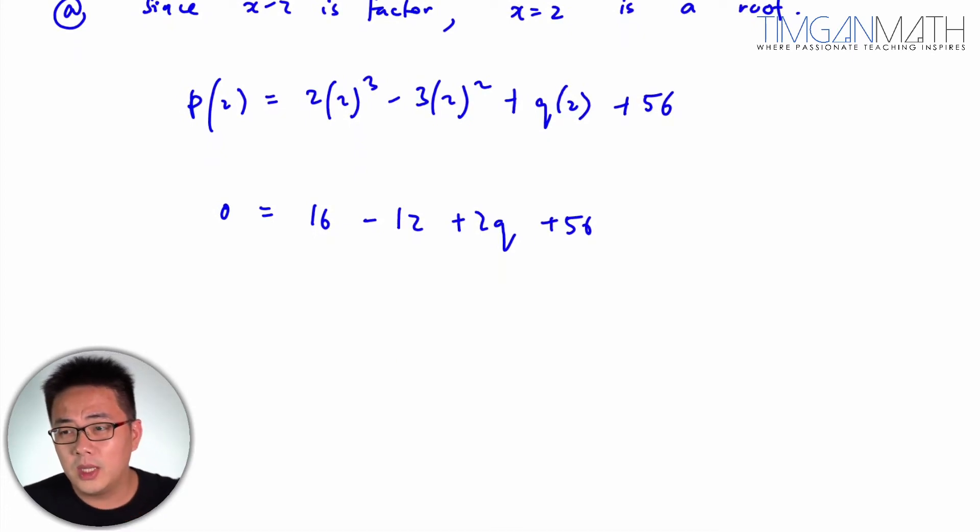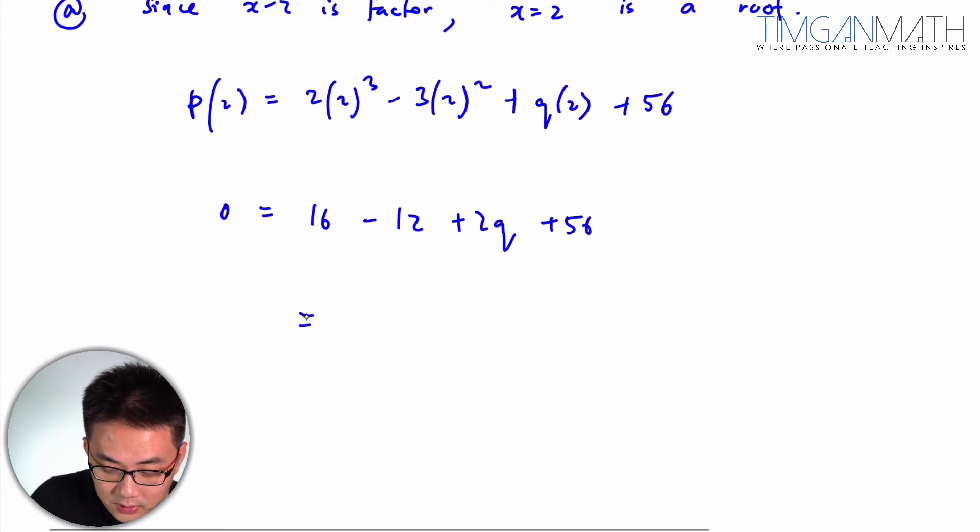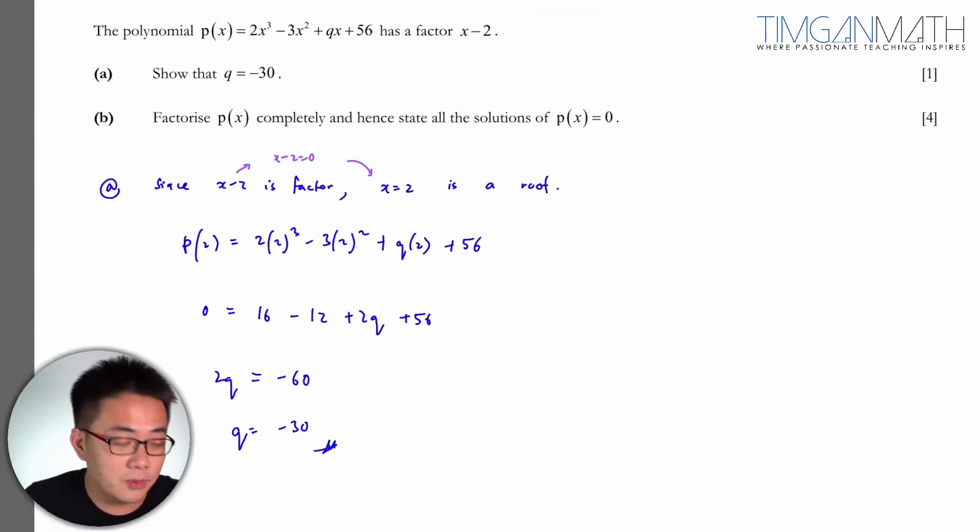That's pretty okay. So without calculator, I think you should be able to show that this is 2q equals minus 60, hence q equals minus 30. Alright, so I think this question is pretty okay.